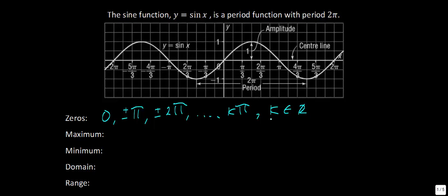The maximum of this function: the amplitude is the distance from the x-axis, and the highest value is 1. The minimum value, going from the x-axis down to the lowest point, is −1. For the domain, this function goes infinitely to the left and right, so x is a member of the reals. The range is defined by our highest value of 1 and most minimum value of −1, so y must be between these values.